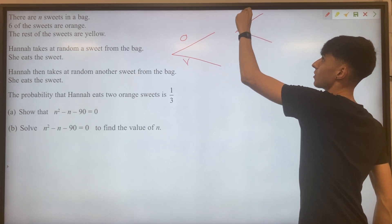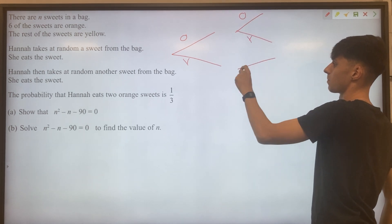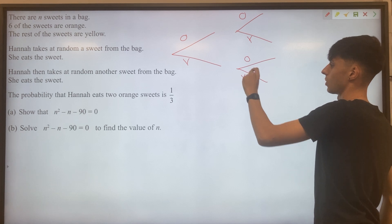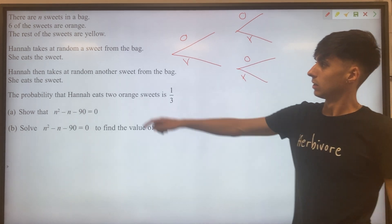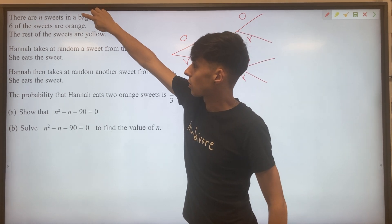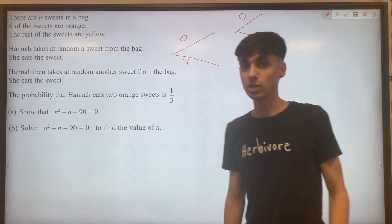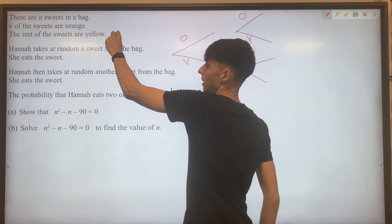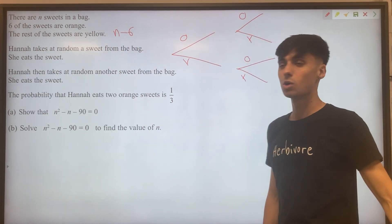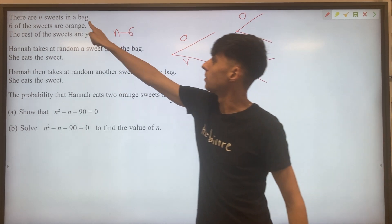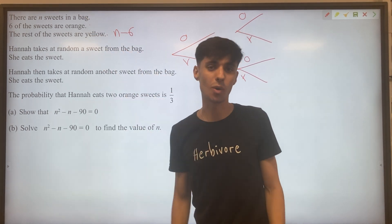Second branch, again, either orange or yellow. Orange or yellow. Filling in our numbers then, if there's N sweets in total and six are orange, well then the amount of yellow sweets will be N subtract six. Because in total, these two need to add up to our N.